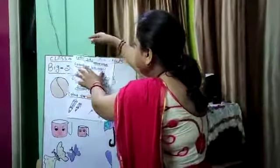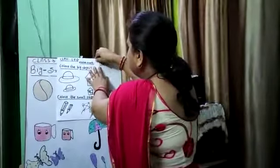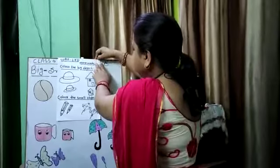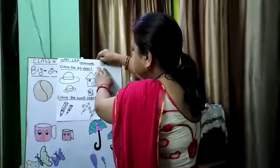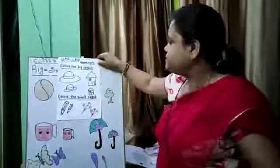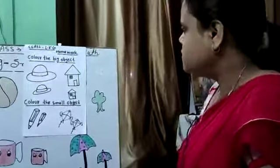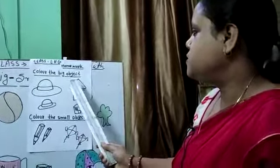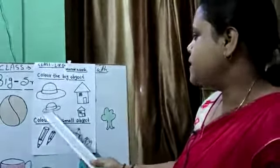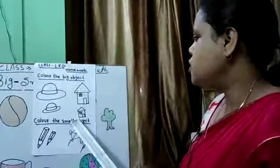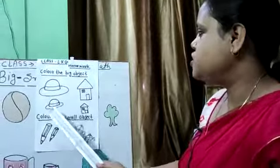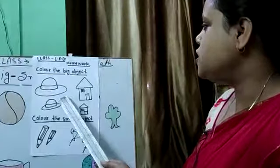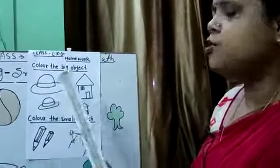Children, this is your home book. See — color the big object. I have made a picture. The big picture you have to color.